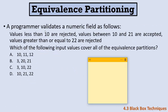The next question: a programmer validates a numeric field where values less than 10 are rejected (partition 1), values between 10 and 21 are accepted (partition 2), and values greater than or equal to 22 are rejected (partition 3). So we have three partitions: less than 10, 10 to 21, and 22 or more.